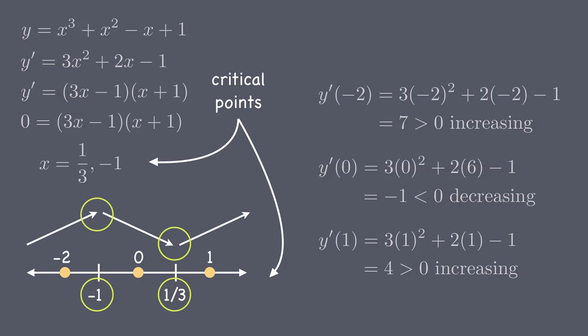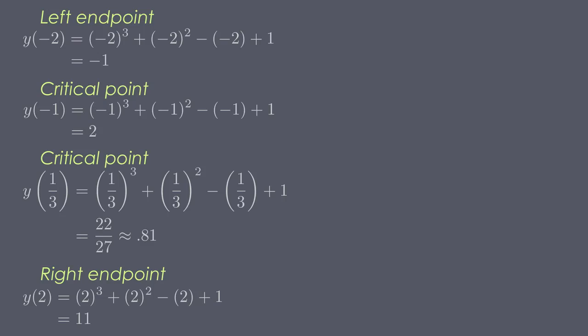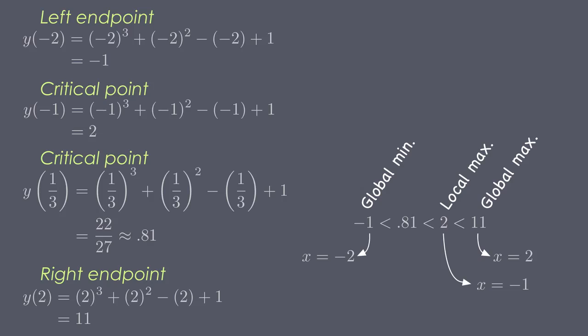Now we know that we have a maximum and a minimum, but we still don't know whether these points are local extrema or global extrema. To find out, we have to plug each of the critical points and the endpoints of the range into the original function. Doing so will tell us the function's actual value at these points, and we'll be able to compare all of them to see which are the highest and lowest. When we plug the critical points and the endpoints into the original function, we get the actual values of the function at those points, and we can see that the function is highest at x equals 2, which makes it the global maximum. The function is lowest at x equals negative 2, which makes it the global minimum. That means that we're left with x equals negative 1 as the local maximum, and x equals one-third as the local minimum.